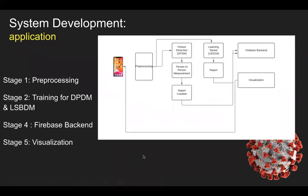For development of the application, we used some preprocessing models. There are two subsystems: DPDM and LSPDM. In the case of DPDM, person-to-person measurement is done and based on that, reports are created. In the case of LSPDM, the learning module is applied, a report is created, and then it is sent to a Firebase backend. With data from the Firebase backend, visualization is generated and that visualized output is delivered back to Android for users to view.